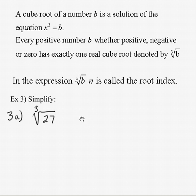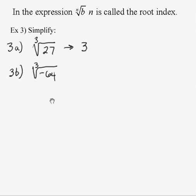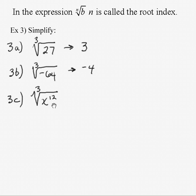The cube root of 27: what number times itself 3 times is 27? The answer is 3, since 3 times 3 is 9 times 3 is 27. The cube root of negative 64: what number times itself 3 times is negative 64? The answer is negative 4, since negative 4 times negative 4 is positive 16, and that times negative 4 again is negative 64. The cube root of x to the 12th: what times itself 3 times is x to the 12th? The answer is x to the fourth power, because raising x⁴ to the 3rd power multiplies exponents — 4 times 3 equals 12.